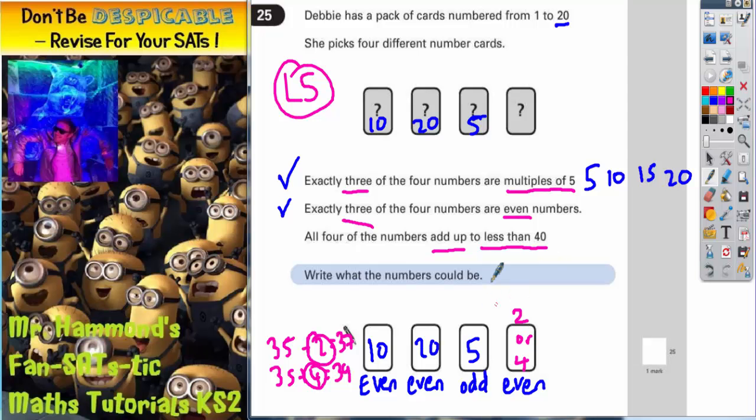Quick double check of the clues. Are exactly 3 of the 4 numbers multiples of 5? Yes they are. 10, 20 and 5 are multiples of 5, so that's okay. Are exactly 3 of the 4 numbers even? 10, 20, and whichever one I choose out of 2 or 4 are even, so that's okay. Do all 4 numbers add up to less than 40? Well we've already said if we choose 2, that makes 37. If we choose 4, that makes 39, which is both less than 40. So the final clue is ticked off as well.